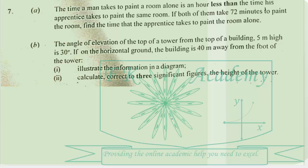Question number 7a. The time a man takes to paint a room alone is an hour less than the time his apprentice takes to paint the same room. If both of them take 72 minutes to paint the room, find the time that the apprentice takes to paint the room alone.